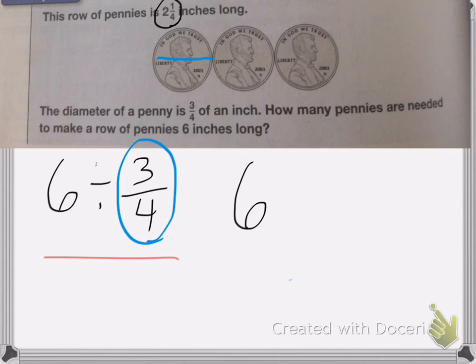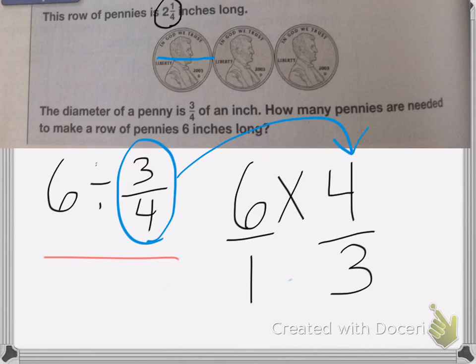I would end up with 6 times 4 thirds. Just like I did last time. So 6 times 4 thirds. So I flipped this number and made it into here. Found the reciprocal. And then I multiplied these two numbers together, which is exactly what I did last time.